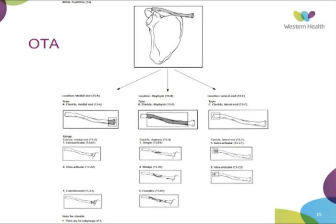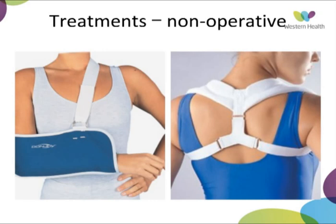Moving on to treatment — on the left you can see the mainstay of treatment for non-displaced injuries, that is a broad-arm sling. The role of the sling is to elevate the shoulder girdle, take the weight off the lateral fragment, and prevent further displacement at the fracture site. On the right, you have the figure-of-eight bandage, which retracts the scapula to try and bring the clavicle out to length, again minimising displacement and angulation.